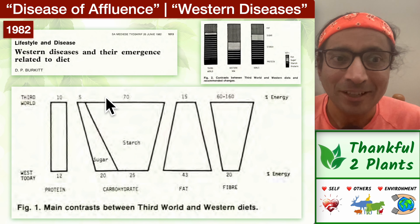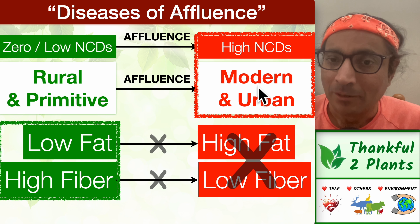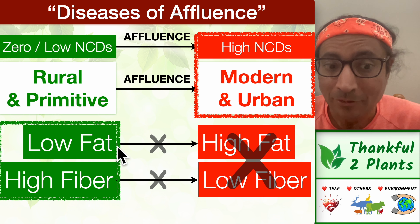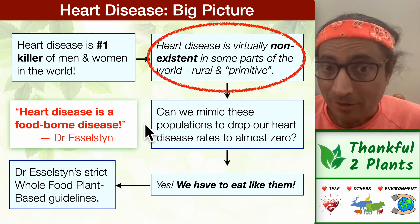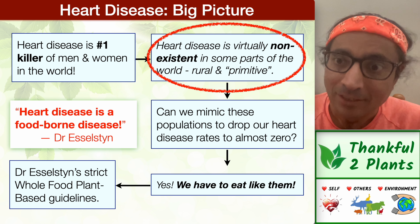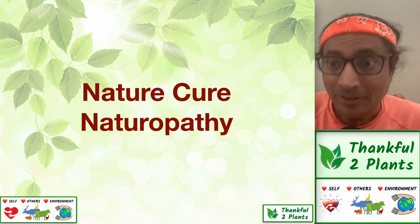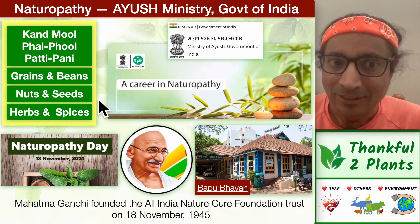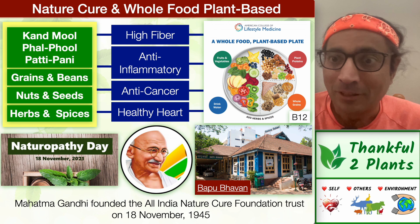These dietary changes leading to higher NCDs have been observed way back in the 1960s across 85-country studies. As we get affluent, modernized, and urbanized, NCD rates go up and our diet becomes high-fat and low-fiber — but we can choose a low-fat, high-fiber diet. That is the ACLM whole food plant-based methodology. Dr. Esselstyn and Dr. Ornish have done landmark interventional studies for heart disease with jaw-dropping results. This ACLM food plate also coincides with Nature Cure or Naturopathy promoted by the Ayush Ministry, Government of India.